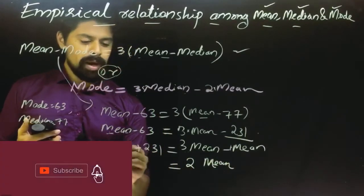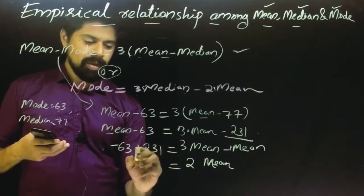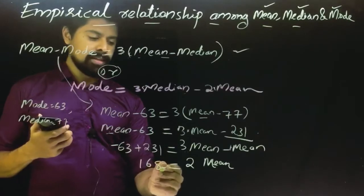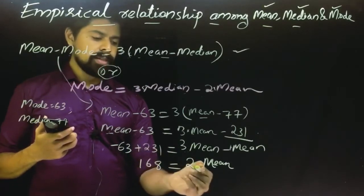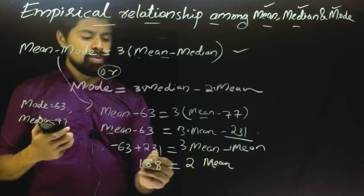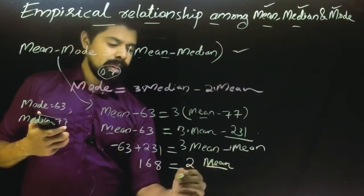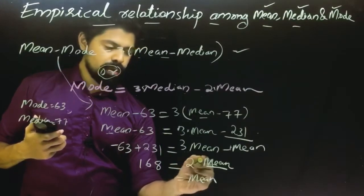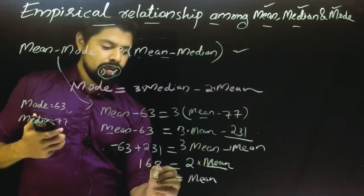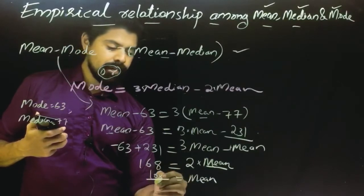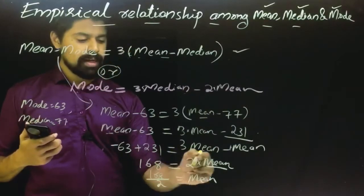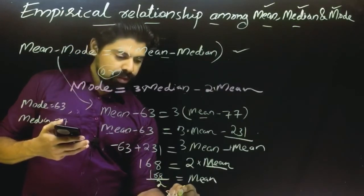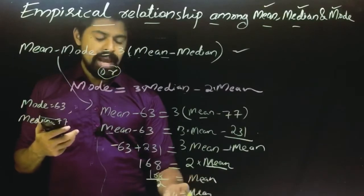Here we have 231 minus 63. That gives us 168. So 2 mean is equal to 168. We divide 168 by 2, and 168 divided by 2 is 84. So mean is equal to 84.